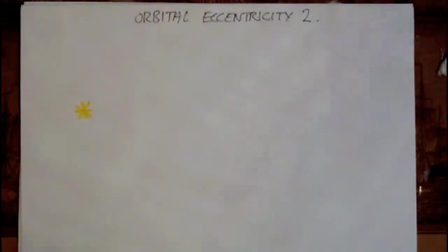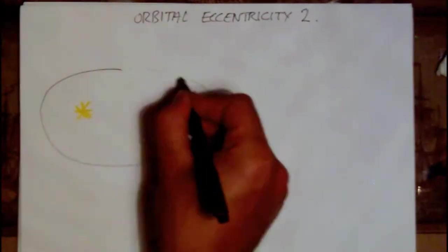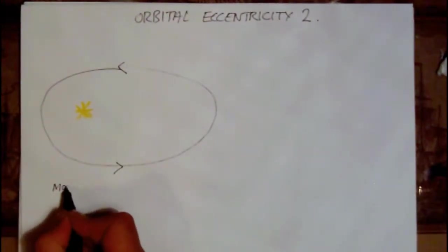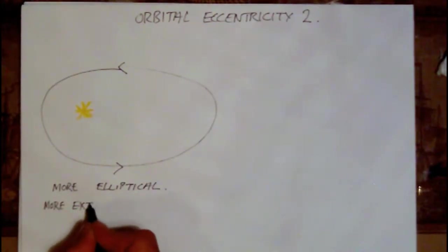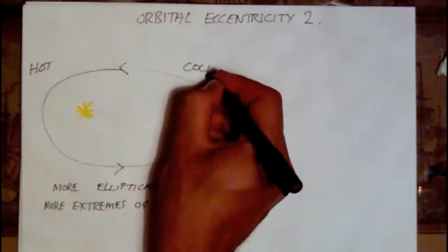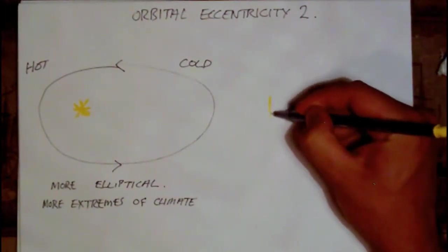When the Earth's orbit is highly elliptical, the difference in solar radiation, that's the amount of heat and light that the Earth receives from the Sun, between summer and winter can be profound, resulting in extreme swings of climate over the course of the year.